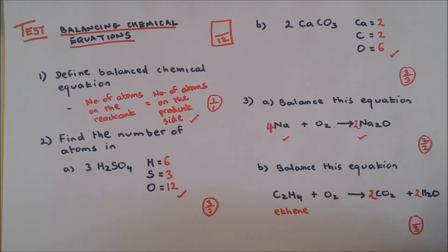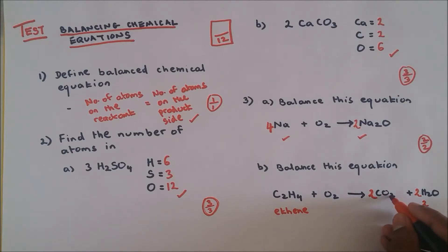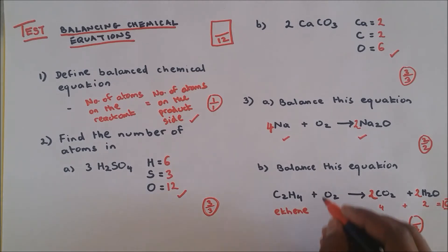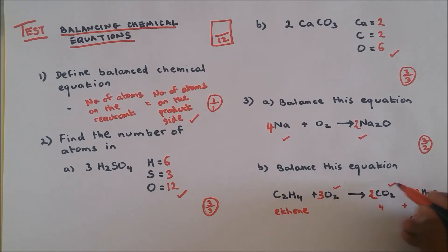Now you count the number of oxygen on the product side over here. How many oxygen do you have? You have two. How many oxygen do you have? You have this and this, so that's four, which gives us six. Six. So we have six oxygen on the product side, but on the reactant side you have two, so to make it six you put a big three.